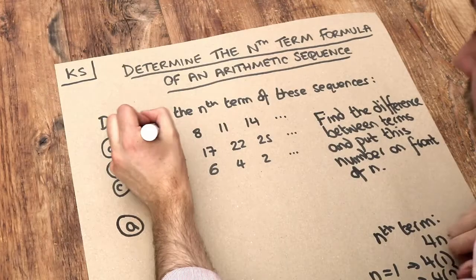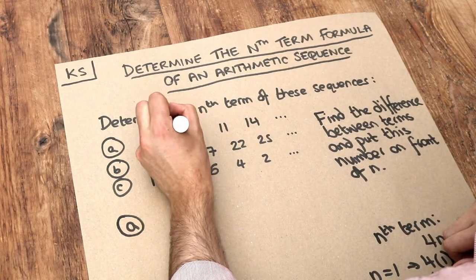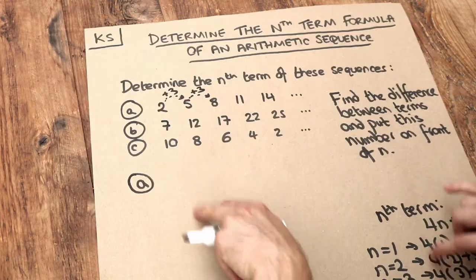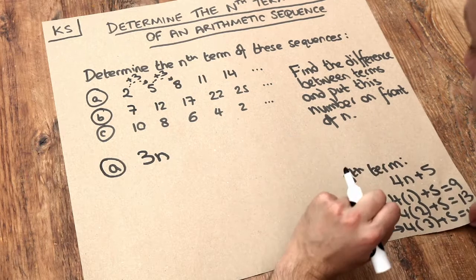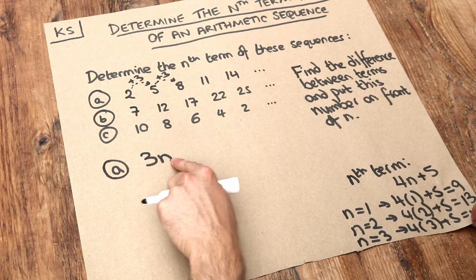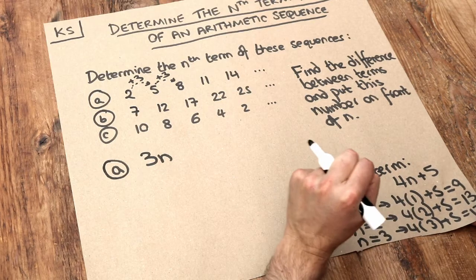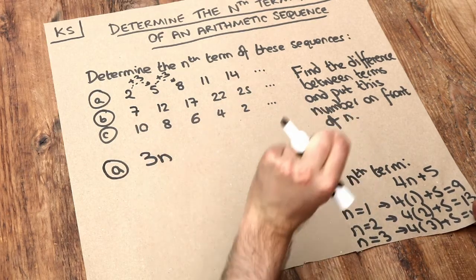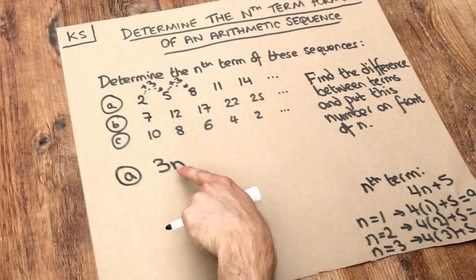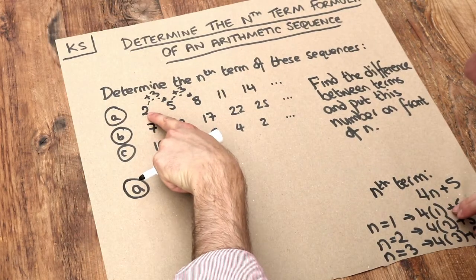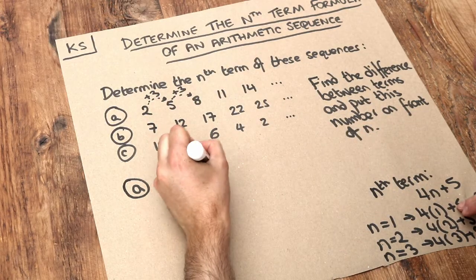For the first sequence, these are going up by 3 each time, so we start the formula with 3n. But if the formula were just 3n, the first term would be 3 times 1, which is 3. But we don't want 3 as the first term — we want 2. So there's a slight adjustment: we need to make it 1 smaller, giving us 3n − 1.